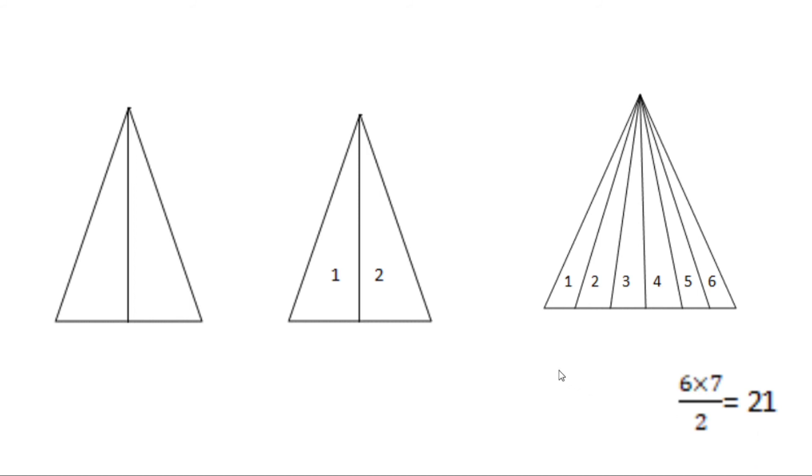The formula to find the number of triangles is going to be n times n plus 1 divided by 2, where n is the number of counts. We just have to add one to that and divide it by two.